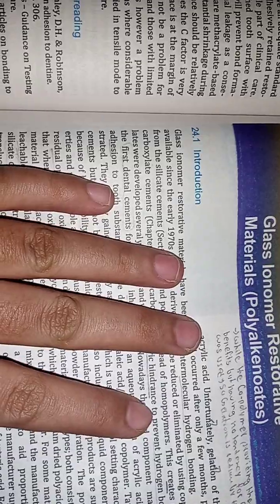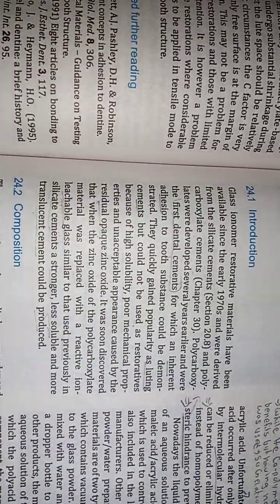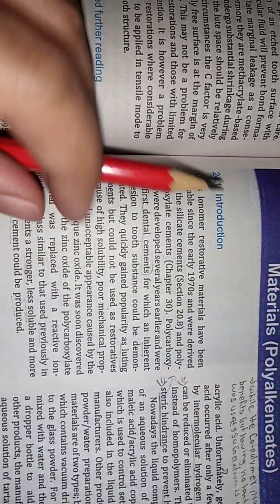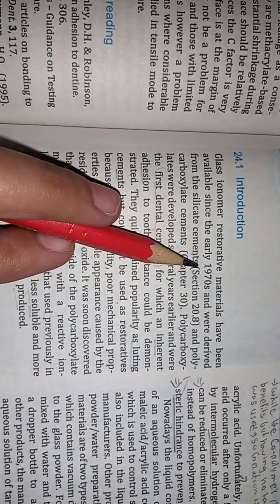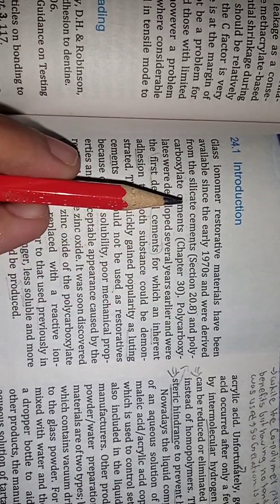We also call it polyalkenoids. Let's discuss the introduction. Glass Ionomer Restorative Materials have been available since early 1970 and were derived from the silicate cement.